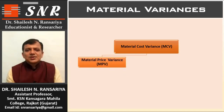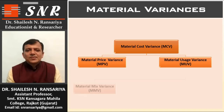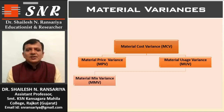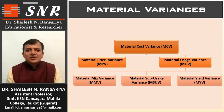Under Material Usage Variance there are three further variances: first, Material Mix Variance; second, Material Sub-Usage Variance; and third, Material Yield Variance.